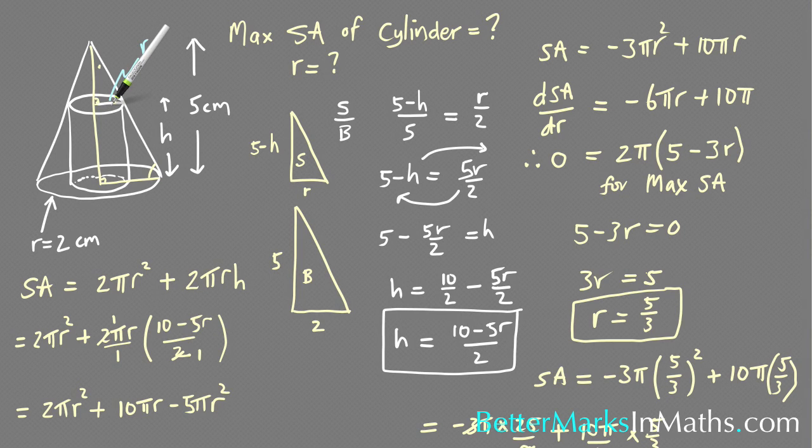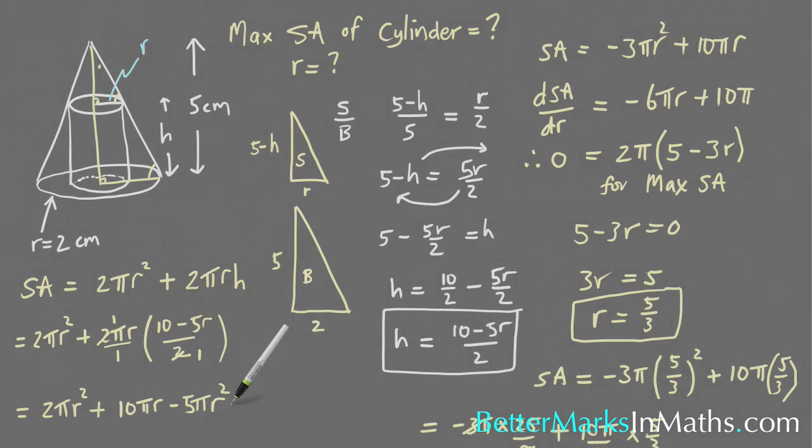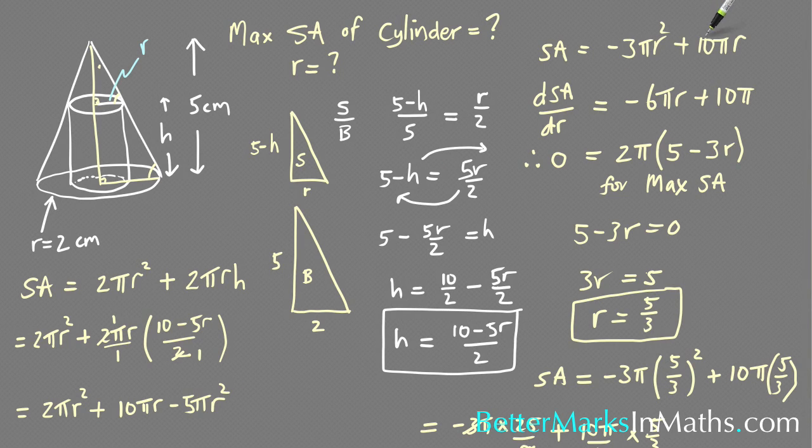And to do that in this case involved using similar triangles from the diagram, and then subbing that expression for h in terms of r. I could have done r in terms of h, it just would have meant two substitutions to do which would have meant more work.